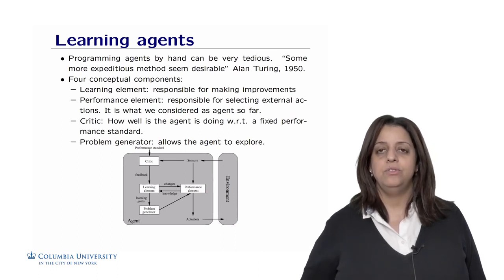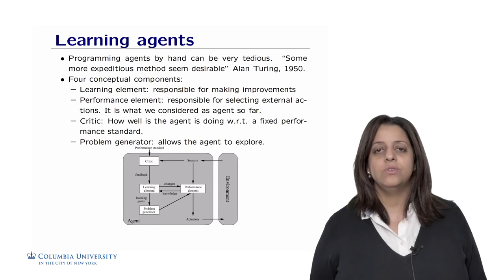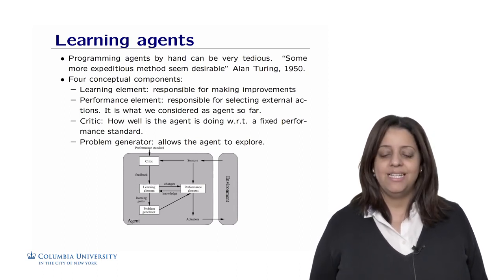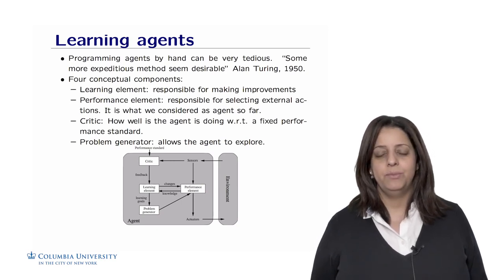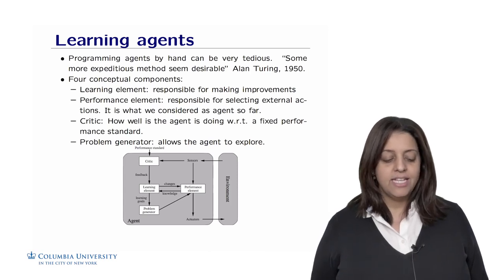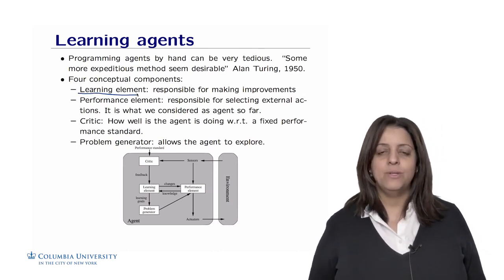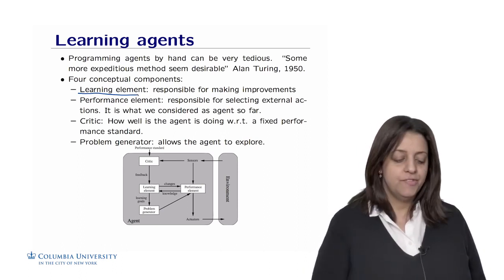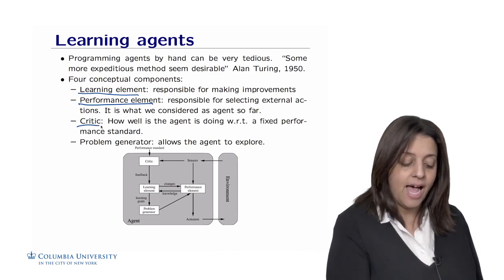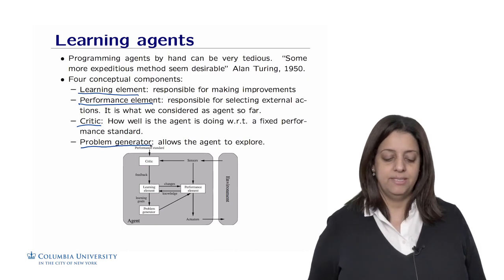We have seen several types of agents from simple reflex to utility agents. However, programming such agents can be very tedious — for a reflex agent, you need to enumerate all possible percepts with their actions and define a model of the world. As Alan Turing said in 1950, some more expeditious methods seem reasonable, and this is where learning agents come in. A learning agent has four components: a learning element (responsible for making improvements), a performance element (selecting external actions), a critique (evaluating performance against a fixed standard), and a problem generator (allowing the agent to explore possibilities and learn on the go).